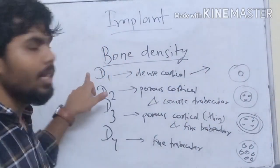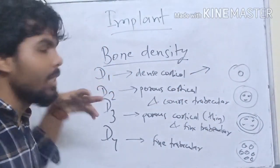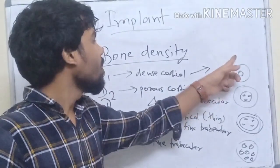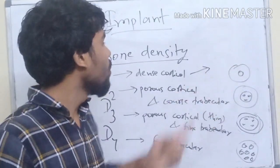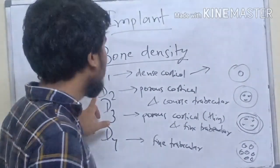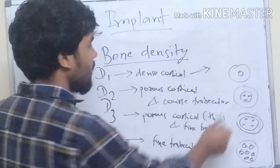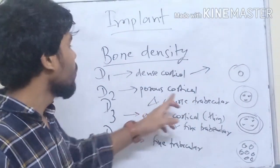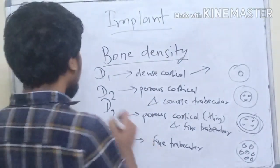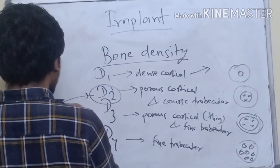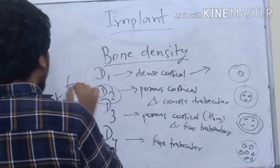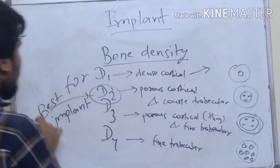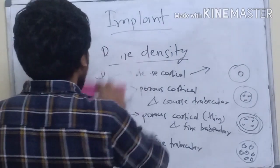Density decreases from D1 to D4. In dense cortical bone (D1), although density is high, blood supply is less and healing is slow. In D2 — porous cortical with thick cortex and coarse trabecular — there is extensive blood supply, making it better for implant placement. Therefore, D2 is the ideal bone type for implant placement. This is a common MCQ.